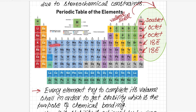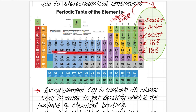Similarly, d-block elements and certain other series also try to complete eighteen electrons in their valence shell. This is called the eighteen-electron rule.